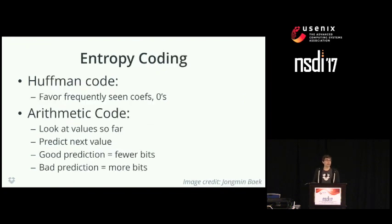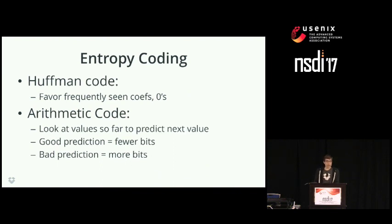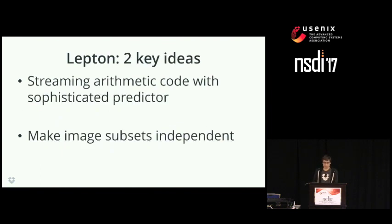Huffman coding isn't the only way to save a series of data values — there's also arithmetic coding. An arithmetic code looks at every value so far and uses all of those values to craft a prediction for the next value. A consistently good prediction results in a losslessly compressed file with fewer bits. Lepton uses an arithmetic code. To get the speed of JPEG Rescan and the savings of PackJPEG, Lepton leverages two key ideas: a very sophisticated predictor that avoids full file transformations, and making image subsets independently decompressible so multiple cores can operate on a single JPEG and distributed chunks can be retrieved in parallel without depending on one another.